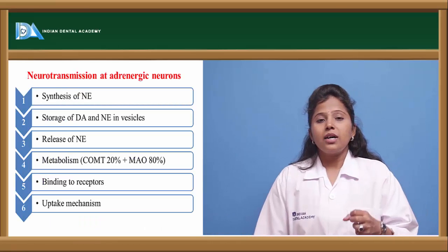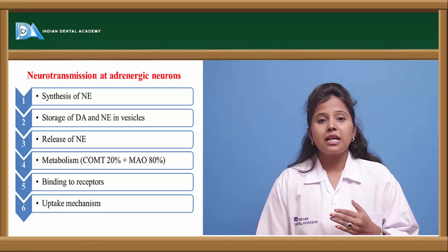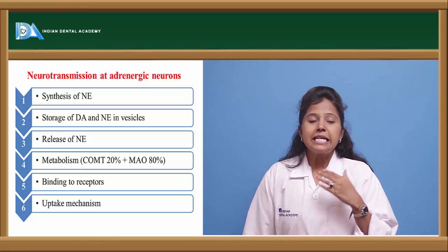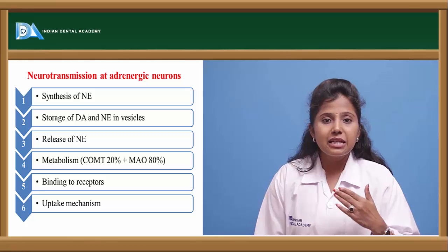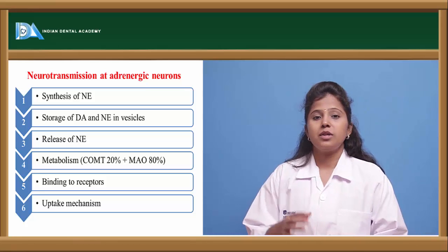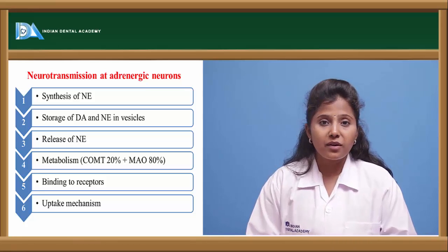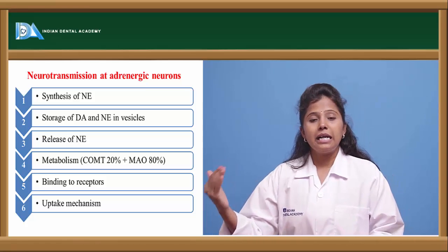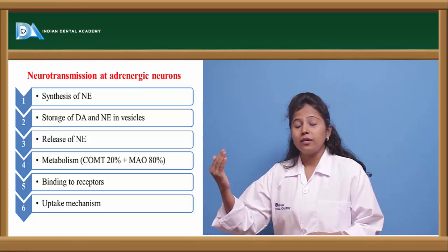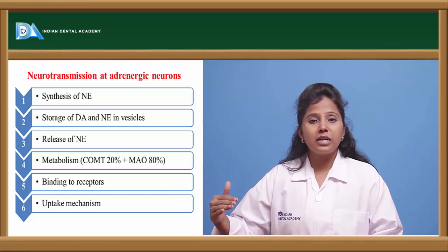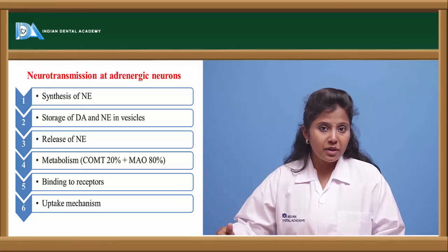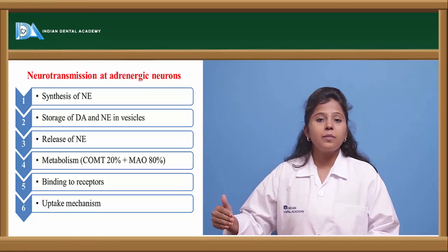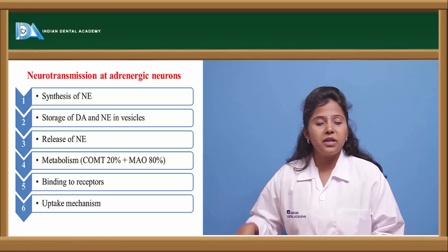Here we can see how the neurotransmitter is released and shows its effect. The neurotransmitter — for example norepinephrine — is first synthesized in the body. Norepinephrine is synthesized from the amino acid L-tyrosine. From tyrosine, DOPA is formed; from DOPA, dopamine; from dopamine, norepinephrine; and from norepinephrine, epinephrine is formed.